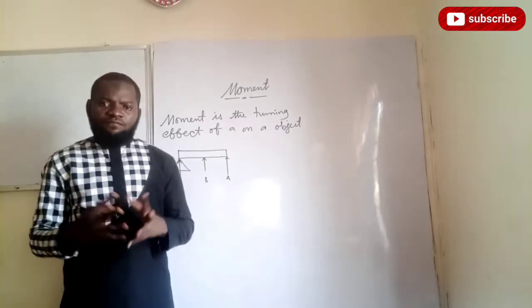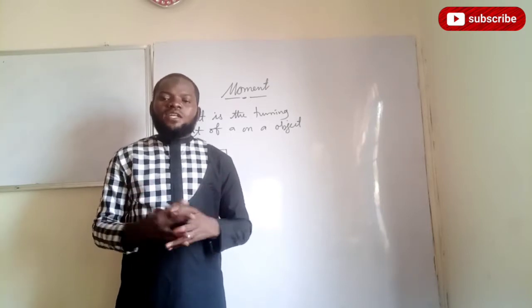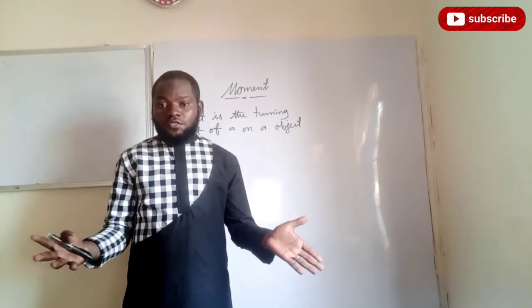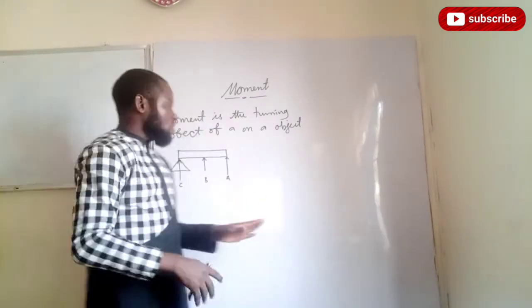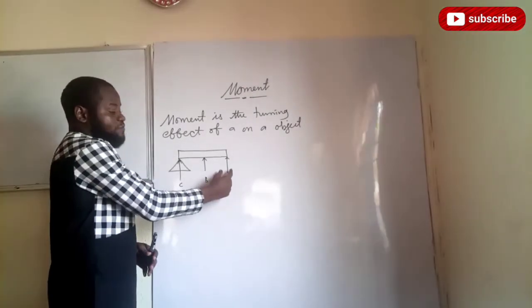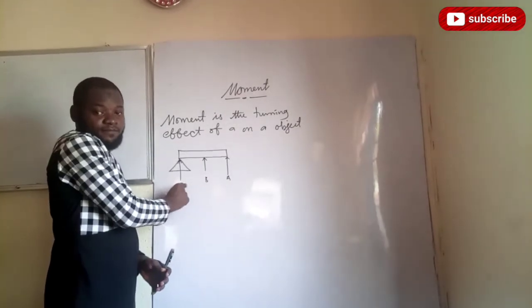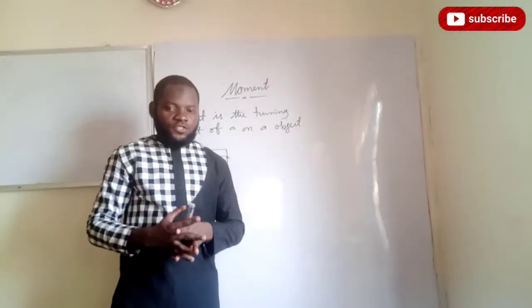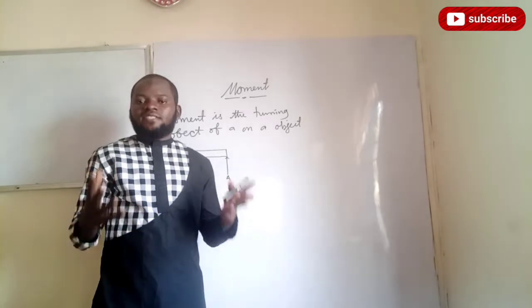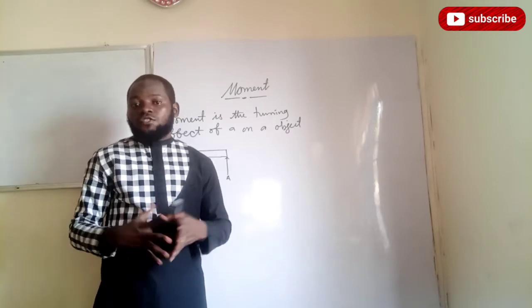Now, there is a difference between moment and moment of a force. The moment of a force tells you the point where it is easiest to apply your force about an axis of rotation. Moment of a force is the product of force and perpendicular distance. That is, if there is no perpendicular distance, moment is equal to zero.